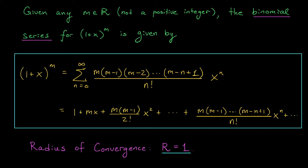Let me show you on the next slide. Here it is: the generalization of the binomial formula to exponents that are not positive integers. If you give me any real number m that's not a positive integer, then the Maclaurin series for the function 1 plus x to the m is given by this infinite sum, which we refer to as the binomial series. The terms of this series are identical to those in the binomial formula — we now just have infinitely many of them. Writing out the terms: 1 plus mx plus m(m minus 1) over 2 factorial times x squared, and so on. As an exercise, try to show that the radius of convergence of the binomial series is r equals 1, using the ratio test. The binomial series can be very useful when dealing with expressions that involve roots.